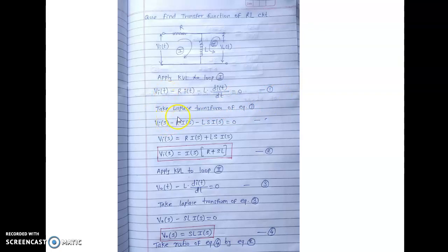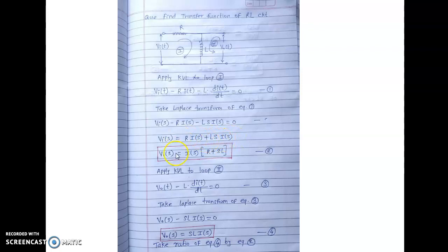Now take the Laplace transform of equation 1, so t is replaced by S. That gives V(S) minus R·I(S) minus L·S·I(S) equals 0. Rearranging — taking the negative terms to the right-hand side — V(S) equals R·I(S) plus LS·I(S). Taking I(S) as common, we get equation number 2.